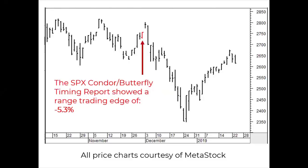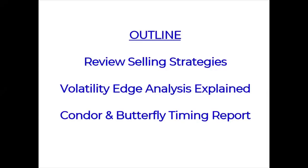Today I want to show you how we get that number, and then I'm going to show you a report from last night's market close. This is a process to walk through because it took me about two years of hundreds of interweaving indicators in Metastock to come up with that number. So here are the three parts of the outline: we're going to review briefly the selling strategies — condors and butterflies — just to make sure we're all on the same page; I'm going to explain the process I use called Volatility Edge Analysis; and then I'll show you a sample report and one from last night's close.